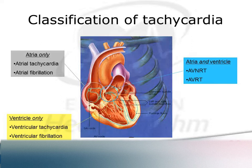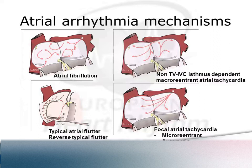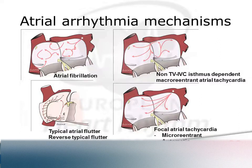Focusing on arrhythmias that simply involve the atria only, I classify these into four groups: atrial fibrillation, the macro-reentrant tachycardias dependent on the right atrial isthmus (the only time I allow students to use 'atrial flutter' for typical flutter), all other macro-reentrant tachycardias in the right or left atrium, and finally focal atrial tachycardia — my topic today.